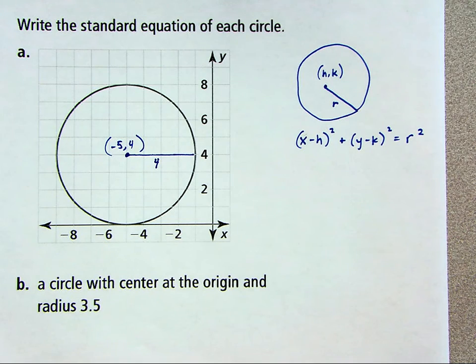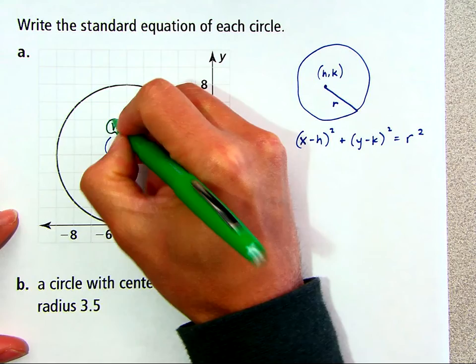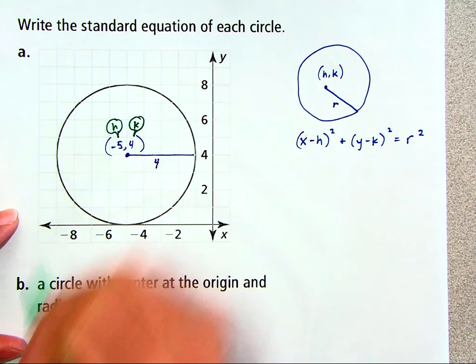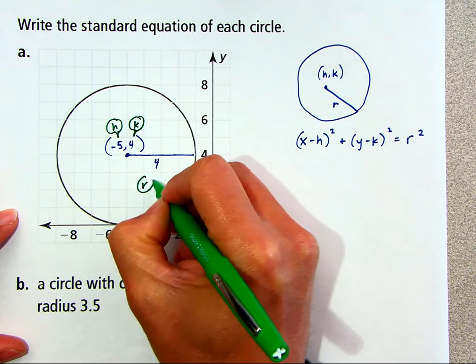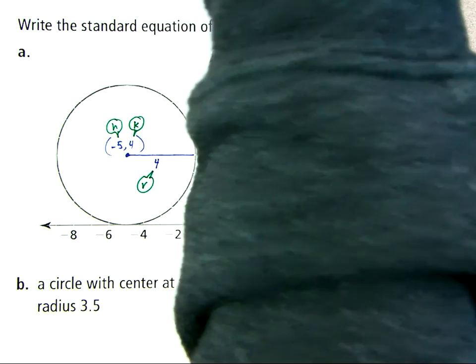All right. So I know the coordinates of the center. I know the length of the radius. So I know the h value of the equation, the k value of the equation, and the r value of the equation. So then I just have to substitute these in.